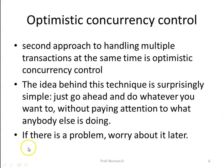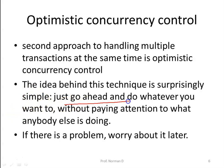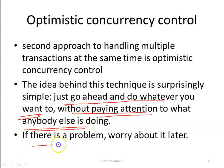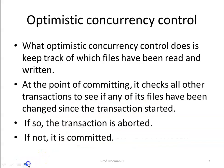Another method is optimistic concurrency control. The idea behind this technique is simple: you just go ahead and do whatever you want without paying any attention to what others are doing. If there is a problem, you worry about it later. This is the approach used in optimistic concurrency control.